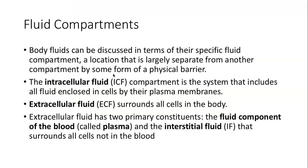The next thing I want to talk about are fluid compartments. Body fluids can be discussed in terms of their specific fluid compartment, basically a location that is largely separate from another compartment by some form of physical barrier. There is the intracellular fluid, the ICF compartment. It's the system that includes all fluid that's enclosed in cells by their plasma membranes. And then we have the extracellular fluid, which has two parts, but the extracellular fluid surrounds all the cells in the body. The two primary parts or constituents of the extracellular fluid are the fluid component of the blood, which we know is called plasma, and something called the interstitial fluid. It's the fluid that surrounds all the cells that are not in the blood. So those are the extracellular fluid. It's pretty simple if you think about it. Intracellular is all the water that's in cells and all the water that's not in cells and it's outside of the cell is the extracellular fluid.